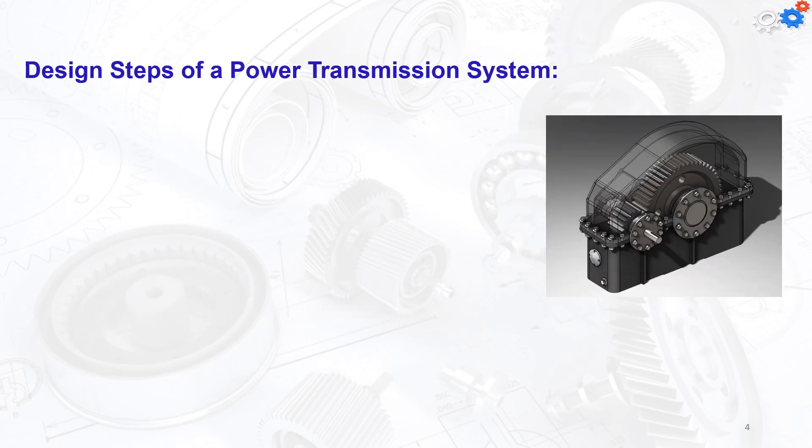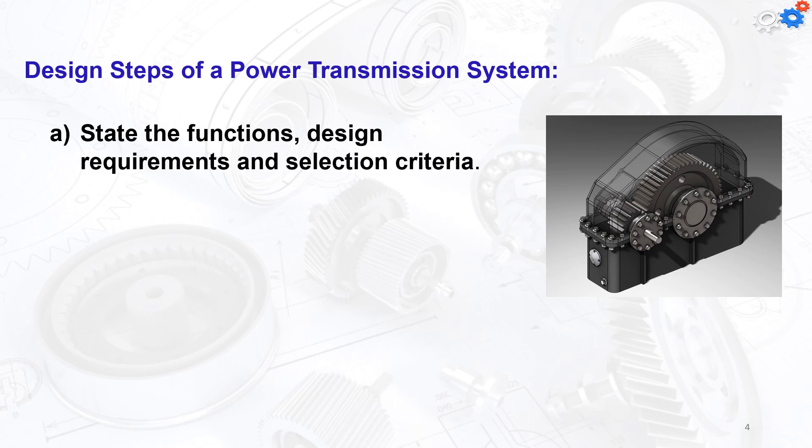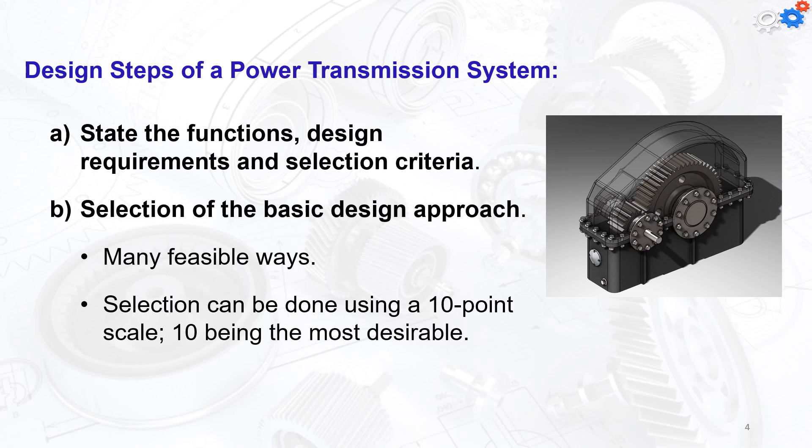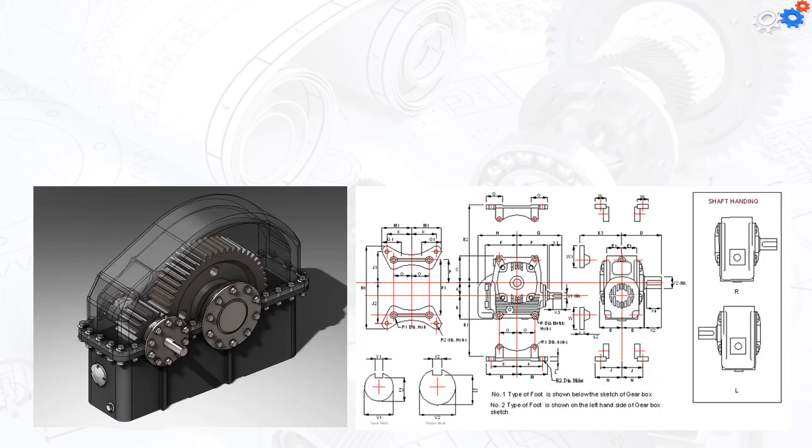The design steps of the power transmission system will be the same design steps for any other system. We start first with stating the function, design requirements, and selection criteria. The selection of the basic design approach is the second point. Many feasible ways are available; selection can be done using a 10-point scale, where 10 is the most desirable design.